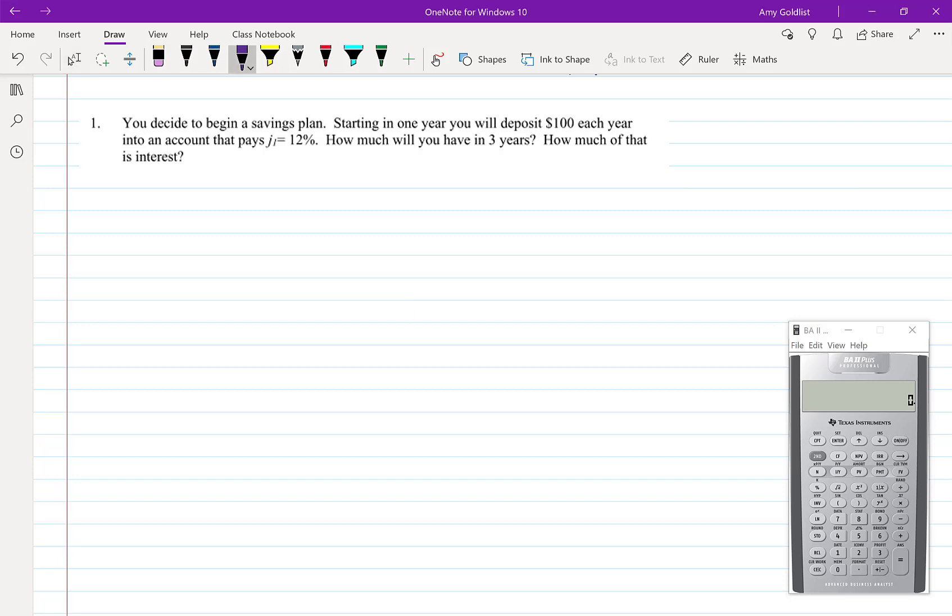Starting with example one, you decide to begin a savings plan. Starting in one year, you will deposit $100 each year into an account that pays J1 equals 12% interest. How much will you have in three years? How much of that is interest?